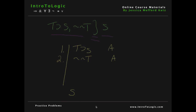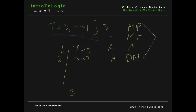So now we have to ask ourselves, using the rules we've learned so far, what can we do with premises 1 and 2? Keep in mind we know of modus ponens, modus tollens, the rule of assumption, and double negation. These are the four rules that we can use to prove s.